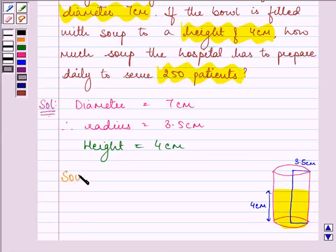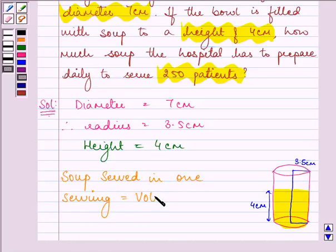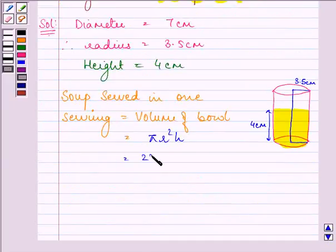Soup served in one serving is equal to the volume of the bowl. That is equal to πr²h, which is 22/7 × (3.5)² × 4 cm³.